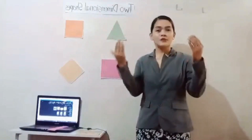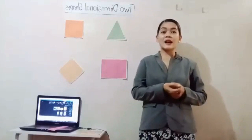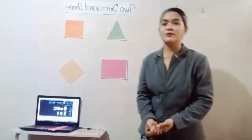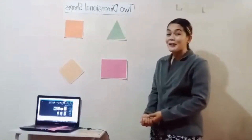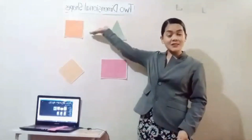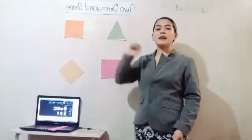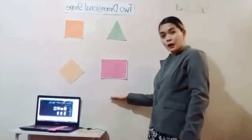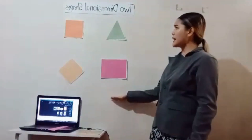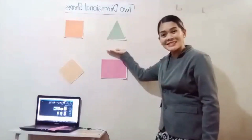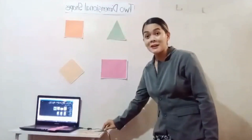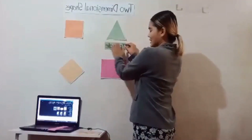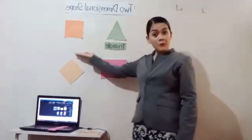Okay, you may now have your seat. Now let's have our lesson for today, and that is all about two-dimensional shapes. Now let us identify the shapes that we have on our board. What shape is this? This is a triangle. Very good, Anna! This is a triangle.